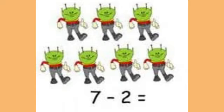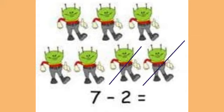See the fourth one. How many pictures are here? 1, 2, 3, 4, 5, 6, 7. Here given 7 minus 2 equal to dash. So we want to cancel the pictures — 2. 1, 2. Remaining counted: 1, 2, 3, 4, 5. So the answer is 5. 7 minus 2 equal to 5.